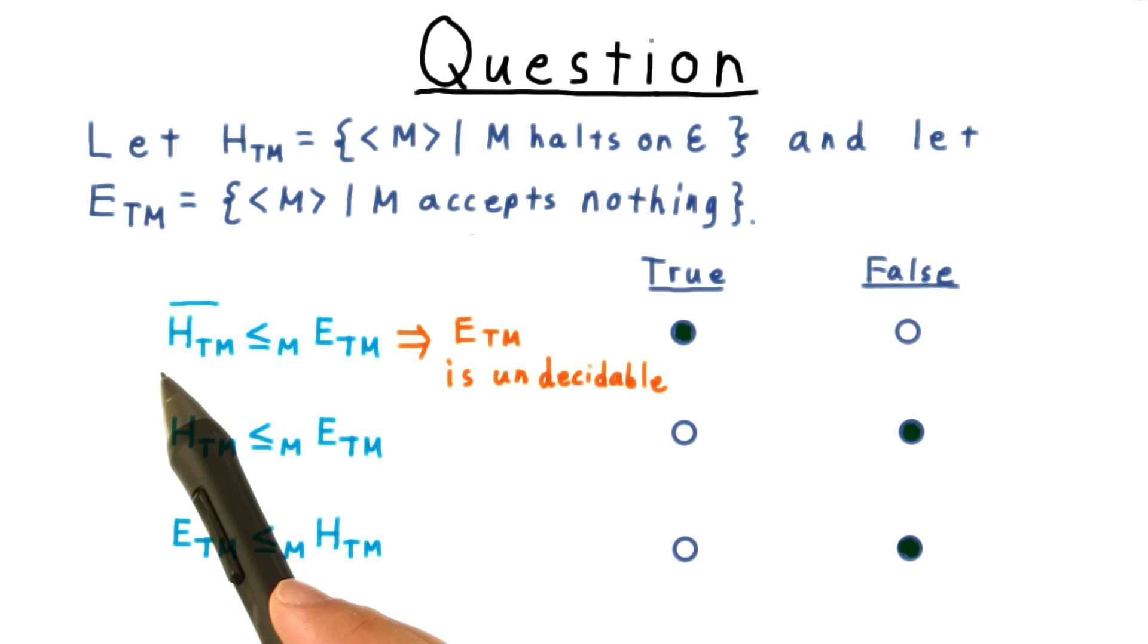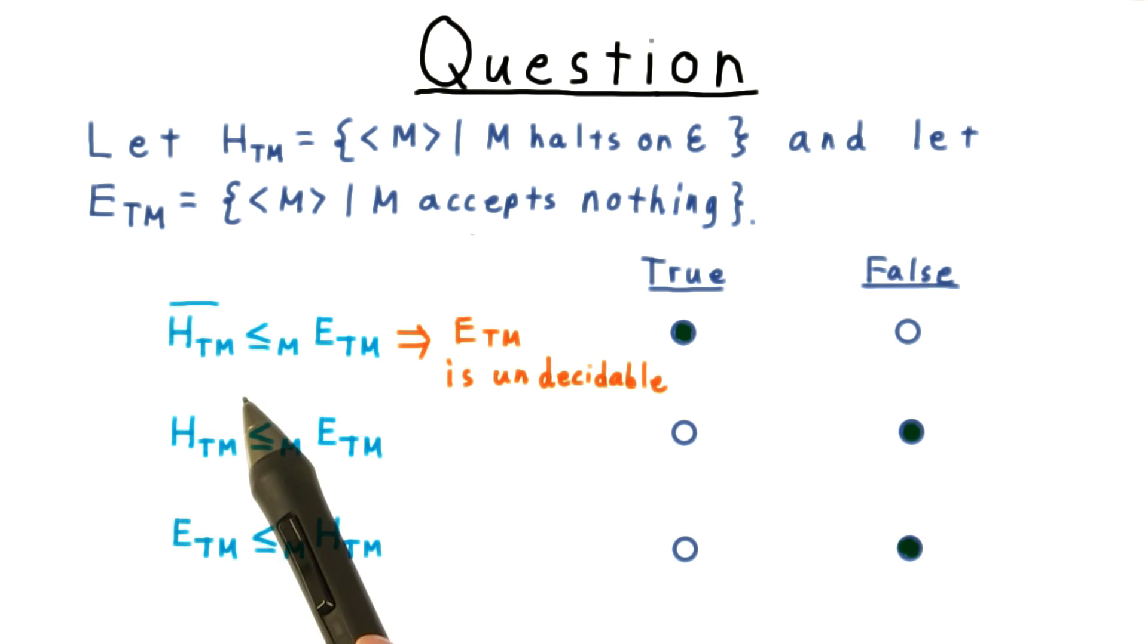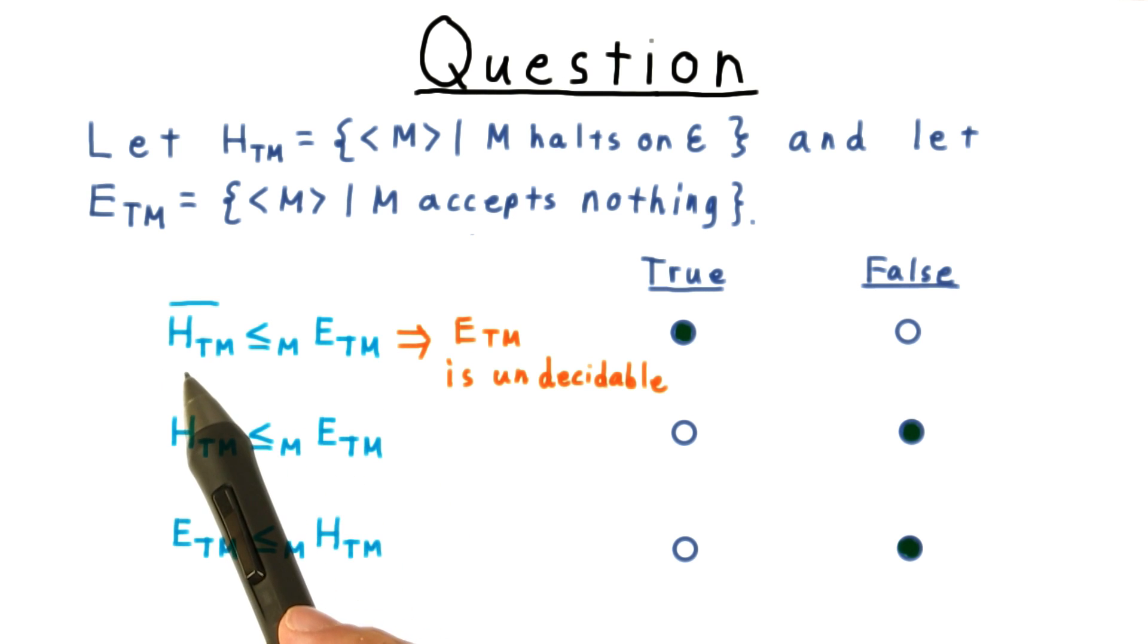If the input machine is in H bar, that means it loops on the empty string, and so will the output machine, and it will accept nothing. On the other hand, if the input machine is not in H_TM, that means it does halt, and then the output machine will accept everything.